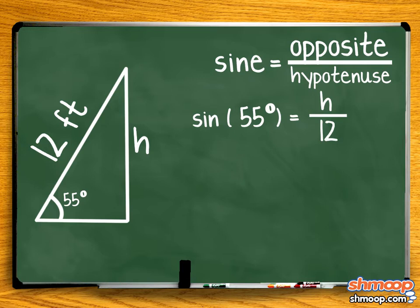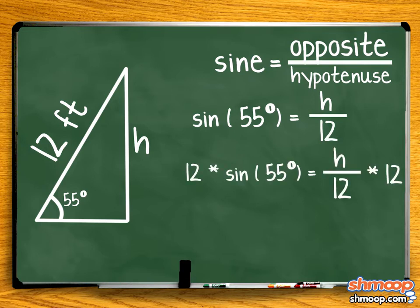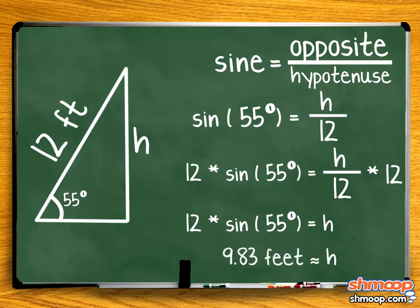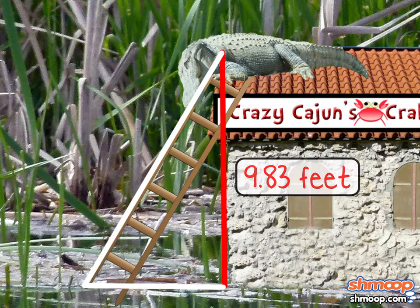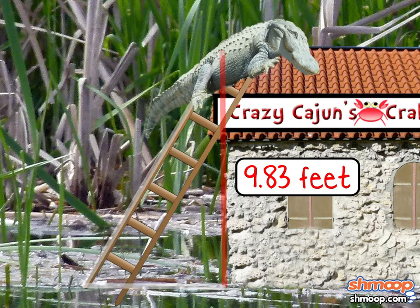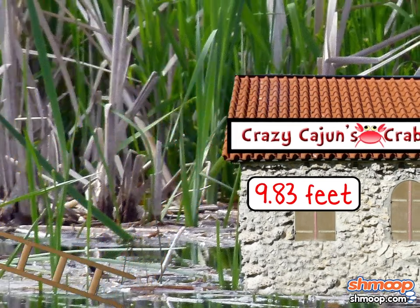To isolate H, we can multiply both sides by 12. And we find that 12 times the sine of 55 degrees equals H, or approximately 9.83 feet. Looks like the crab shack isn't quite ten feet high. Darn.